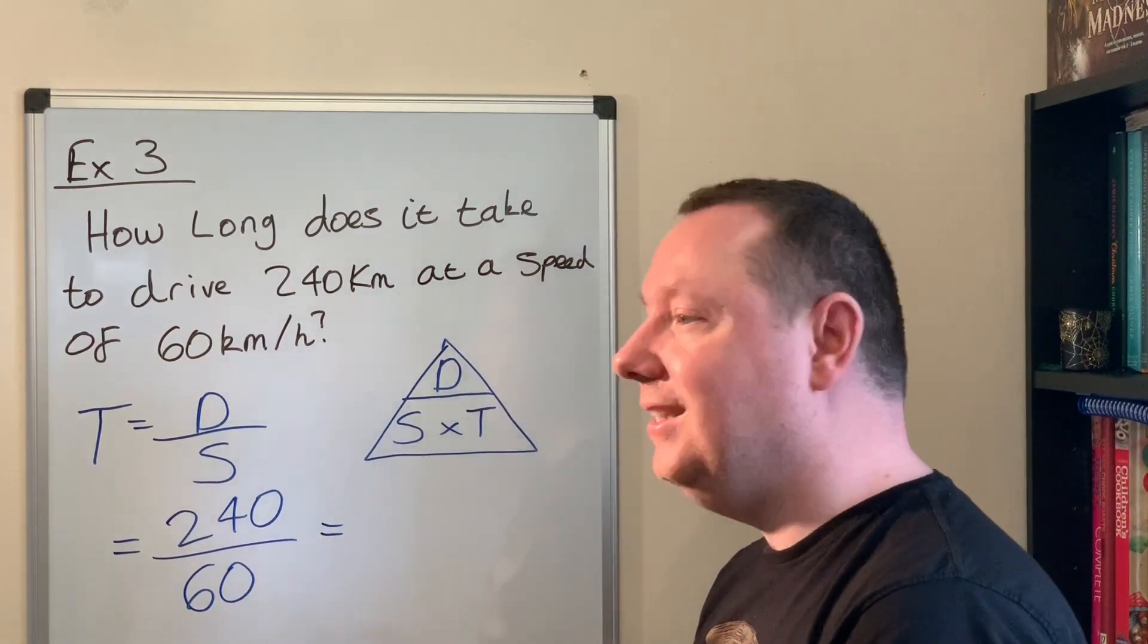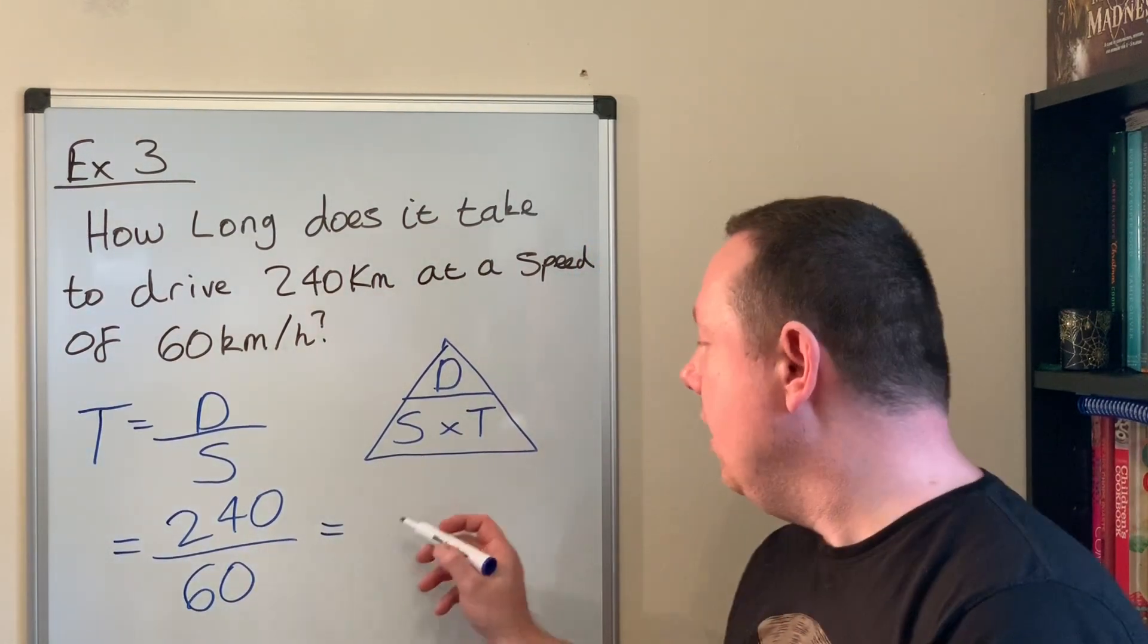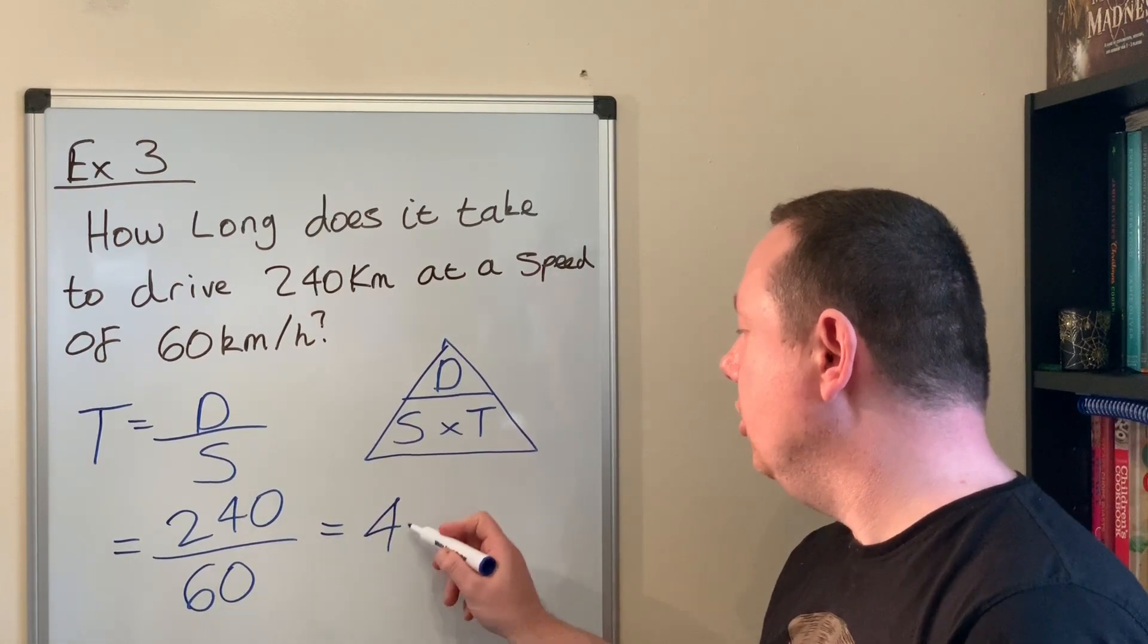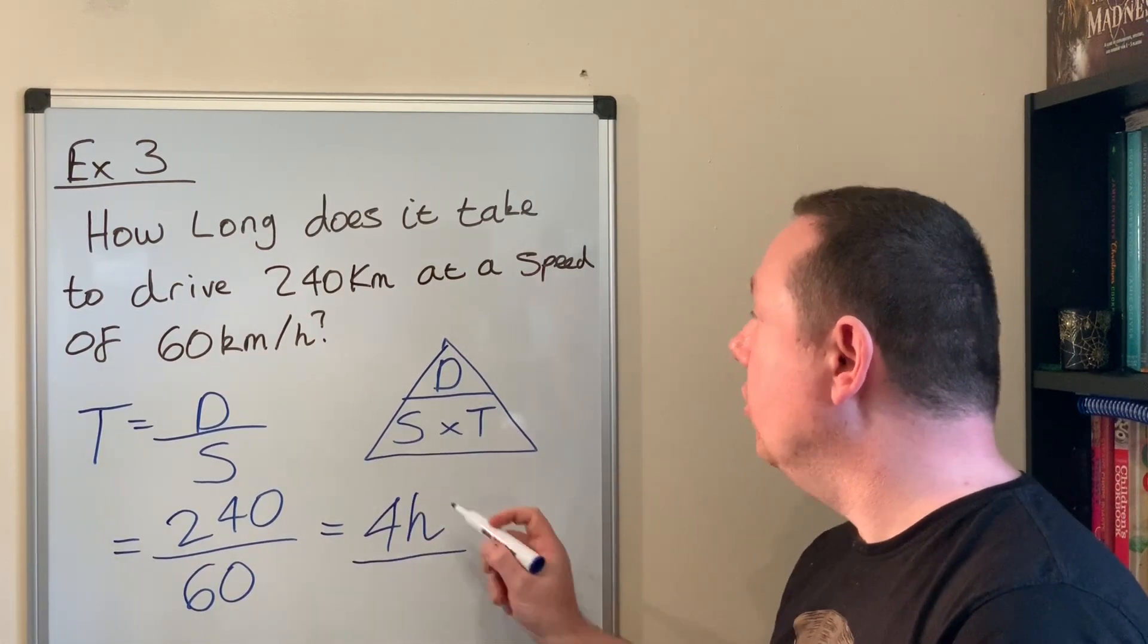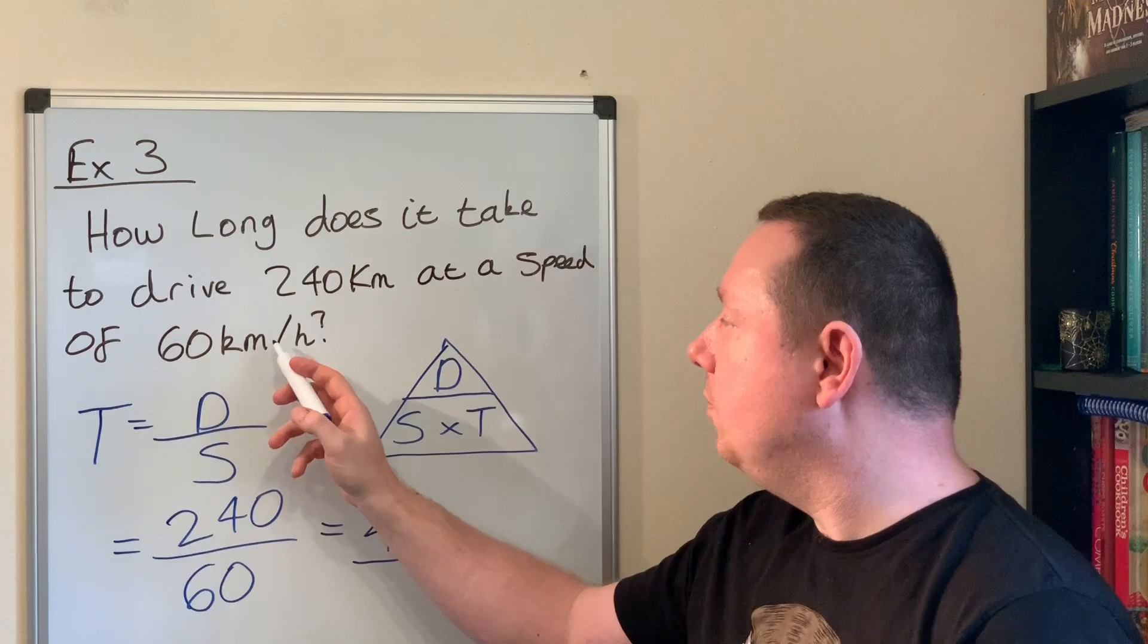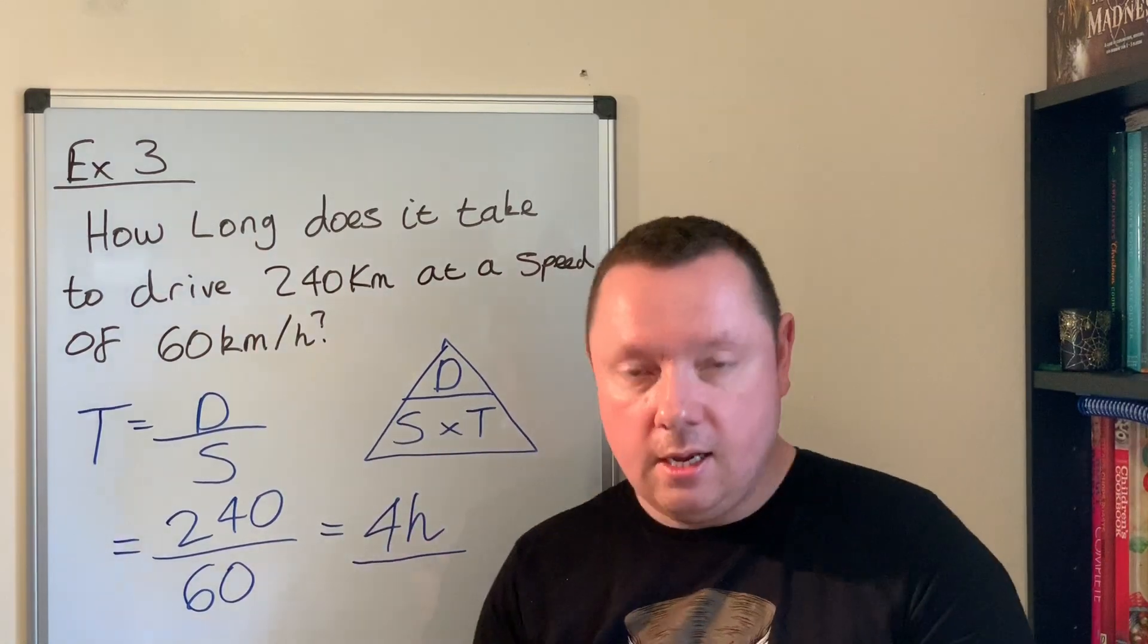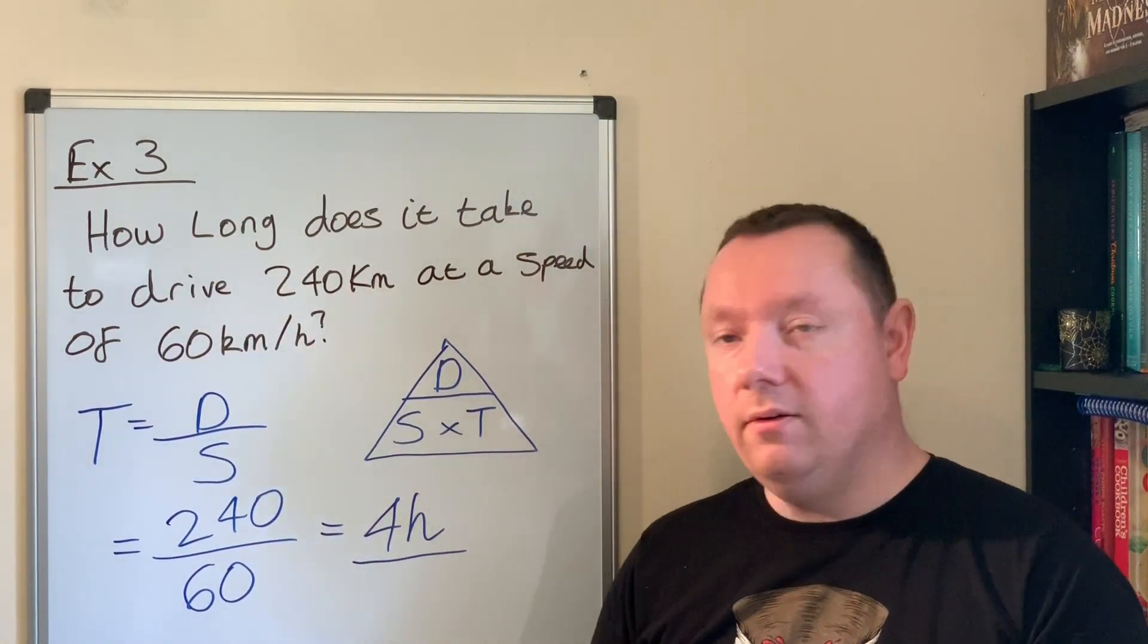There are four 60s in 240, so the answer is 4. Our units are hours because it was 60 kilometers per hour. That's a simple example to calculate time.